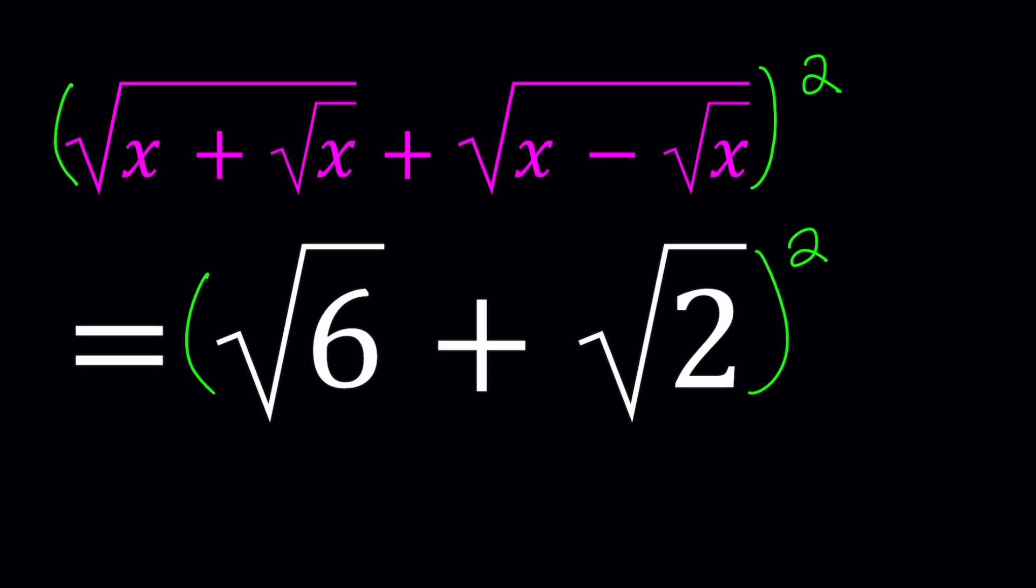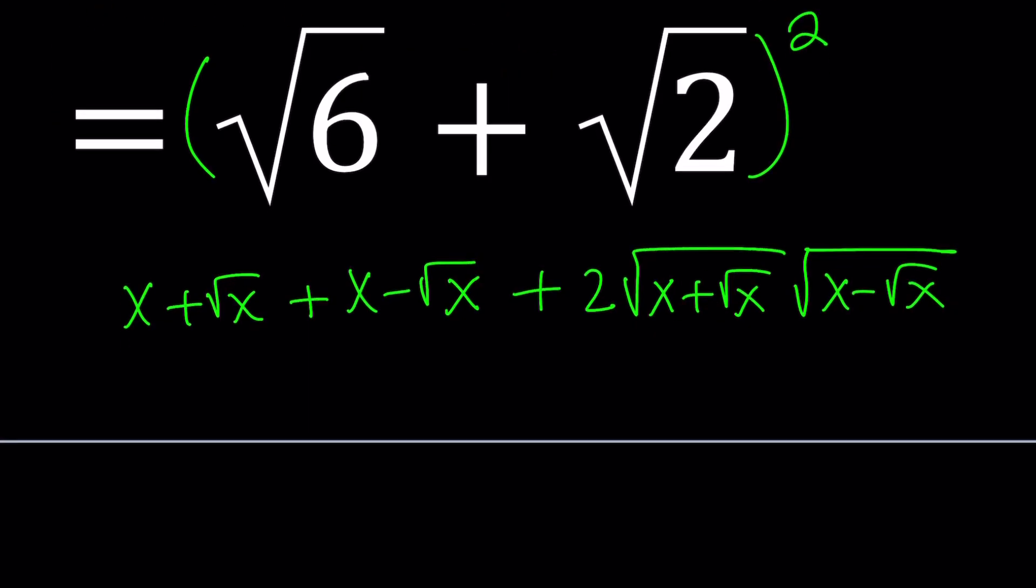I have something like a plus b squared and that's going to be a squared plus b squared plus 2ab. So the first term is x plus root x. The second term is b squared which is x minus root x. Plus the 2ab is 2 times the square root of x plus square root of x times the square root of x minus the square root of x. And this equals root 6 plus root 2 squared.